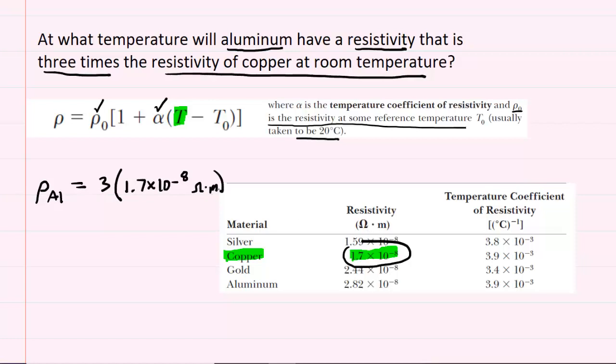So, we'll take out our calculators, and we'll basically multiply here, and we'll get 5.1 times 10 to the negative 8th ohm meters. So this is the resistivity value that we're going to be using for aluminum.